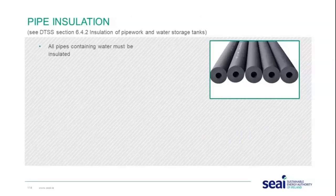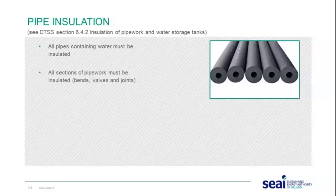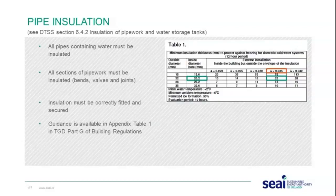Regarding pipe insulation — refer to the Domestic Technical Standards and Specifications section 6.4.2. In an attic, all pipes containing water must be insulated. All sections of pipework must be insulated, including any bends, valves, and joints. Insulation must be correctly fitted and secured. Further guidance is available in Appendix Table 1 of Part G of the Building Regulations.